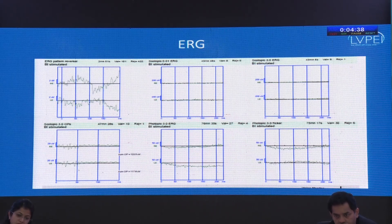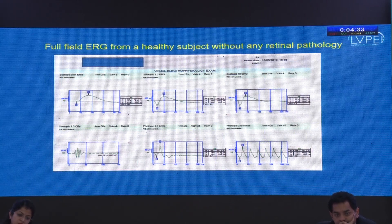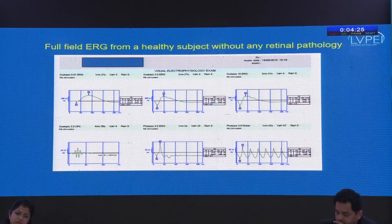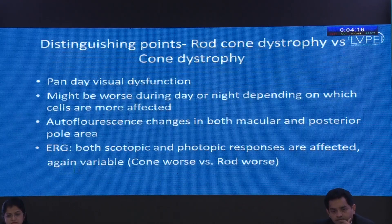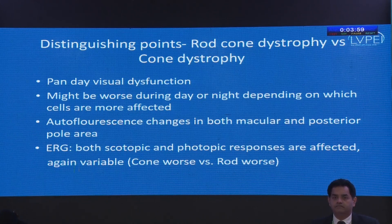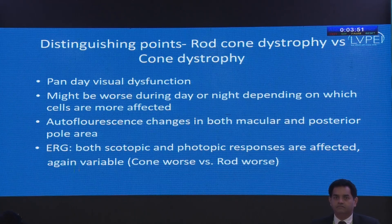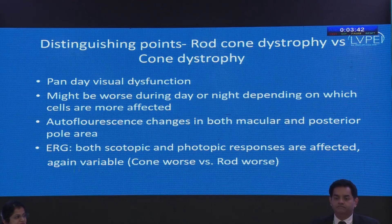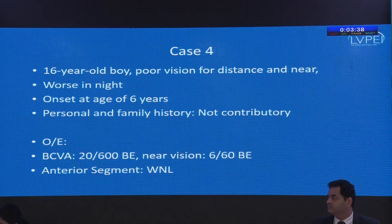A normal ERG shows the A wave, B wave, scotopic oscillatory potentials, photopic 3 Hz ERG, and photopic 30 Hz flicker, with each cell type responsible for its function. Distinguishing between cases 2 and 3: case 3 had pan-day dysfunction whereas case 2 had difficulty primarily in daytime, which provides a key clinical clue. Looking at changes in the posterior pole as well as mid-periphery also helps. For rod-cone vs. cone dystrophy, if visual function is more affected in the day it's more likely cone-rod; if at night, it's more likely rod-cone dystrophy. Autofluorescence and ERG play a major role.